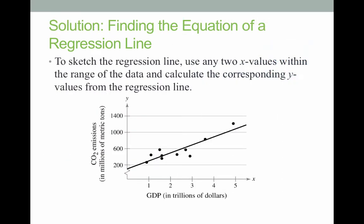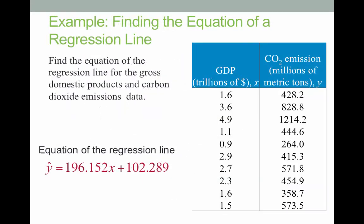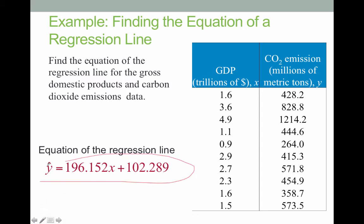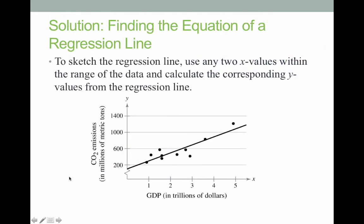You're also going to want to sketch this regression line using any two values. The easiest way to sketch it is to highlight all your data — your GDP and your carbon dioxide emissions — go into Insert Chart, and insert a scatter chart. When you insert a scatter chart, you have an option of putting on a regression line, and it will give you the actual equation for the regression line and actually draw the line as we see it here.